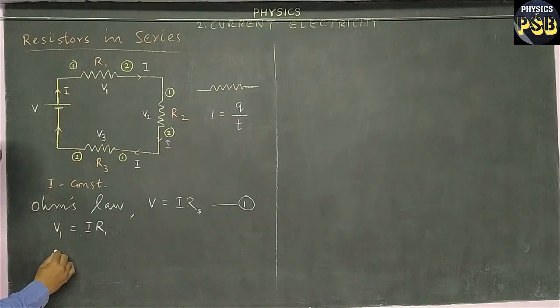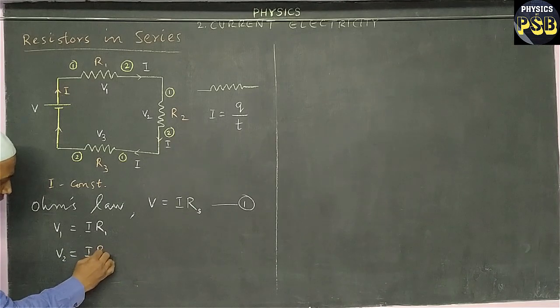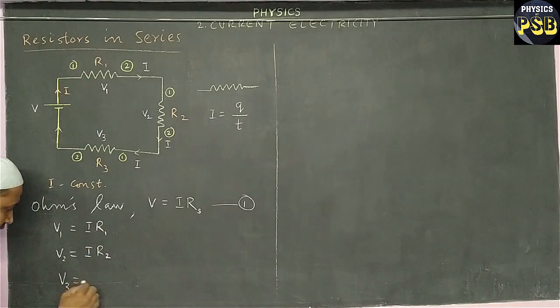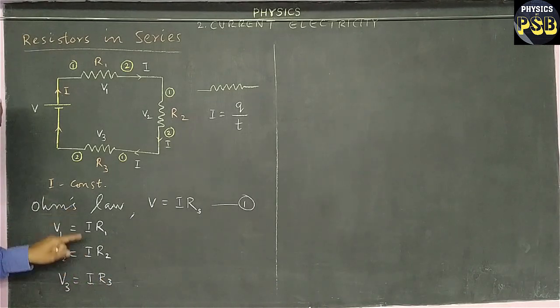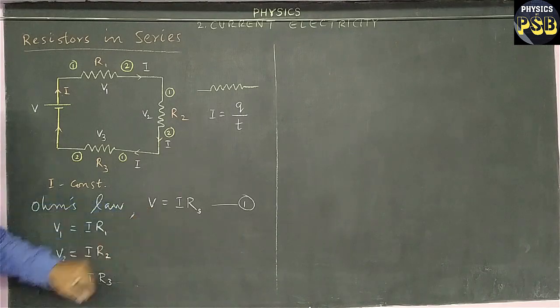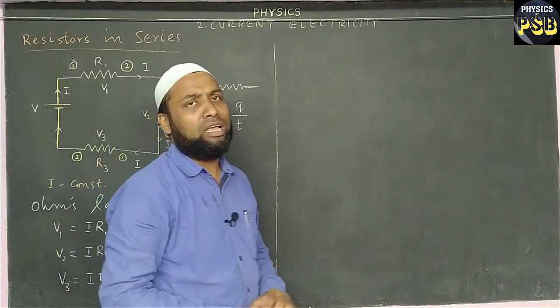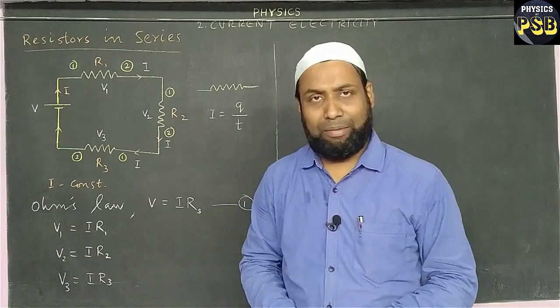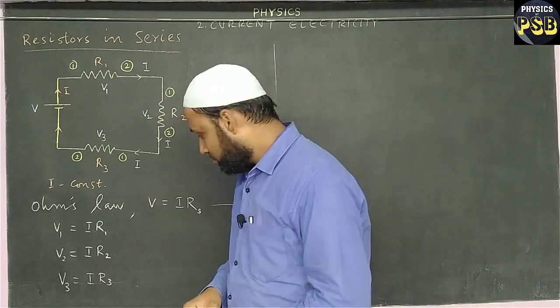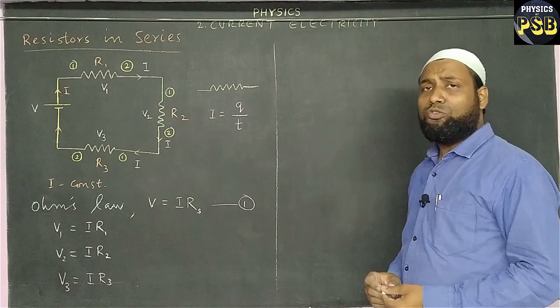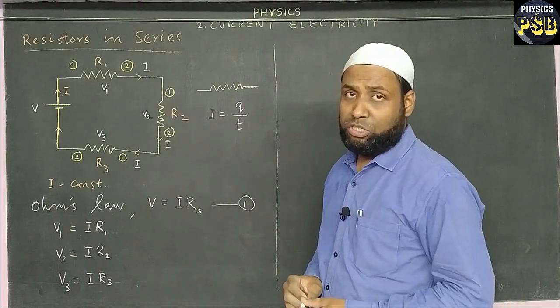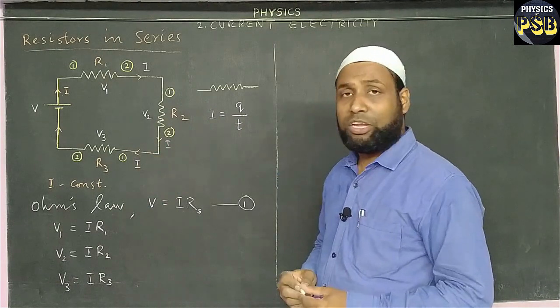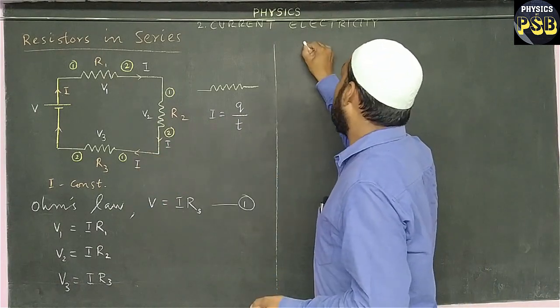Then V2 is taken as IR2, and V3 is taken as IR3. In these three equations, including this equation, all the four equations I value remains same. Now if you want to find out the total voltage across this circuit, then it can be done by adding V1, V2, and V3.